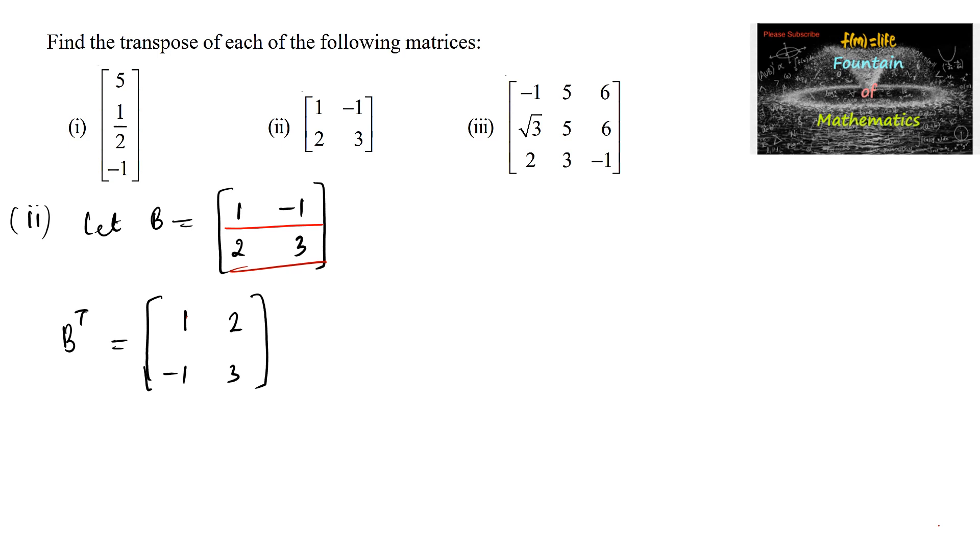So B is a matrix of order 2 by 2. It is a square matrix, so B transpose also will be the square matrix, 2 by 2. Now let's check third one.